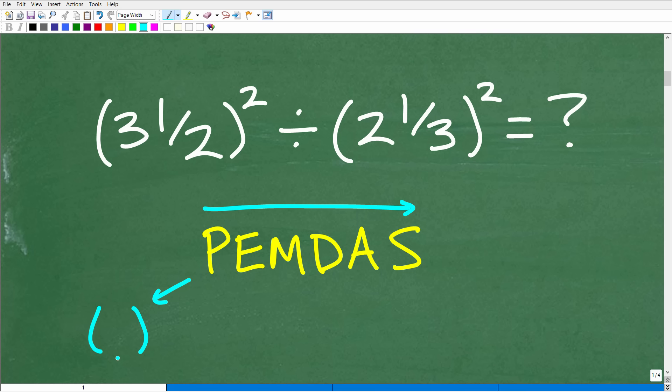P stands for parentheses—you want to do everything inside parentheses, but really that stands for grouping symbols, so that could be brackets or squiggly brackets. E is effectively a power. If I had like 2 to the third power, this little 3 up here is called the exponent, this 2 down here is called the base. The entire thing is a power, so E stands for exponents or powers.